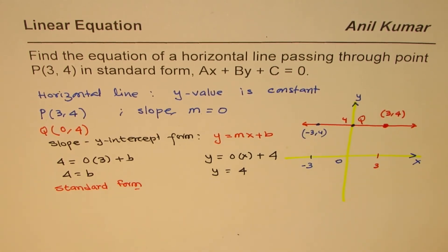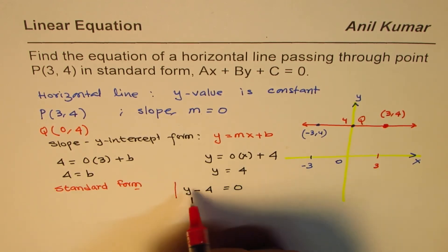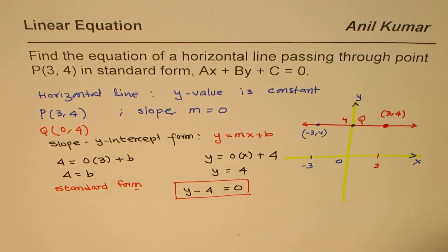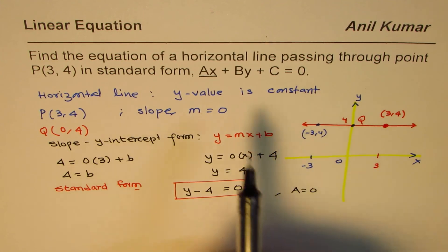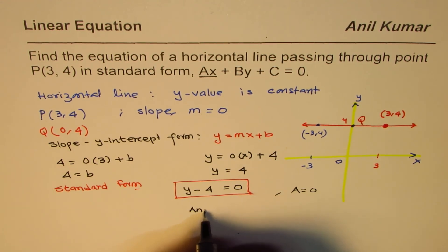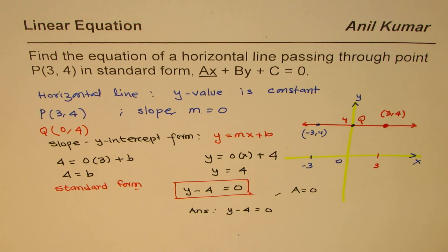To convert to standard form, we need zero on the right side, so we bring four to the left side and get y minus four equals zero. That is the equation in standard form. Notice there is no x term, meaning a equals zero. Remember, a is non-negative in standard form, so it can be zero. Our final answer in standard form is y minus four equals zero — a line passing through (3,4) that is horizontal.